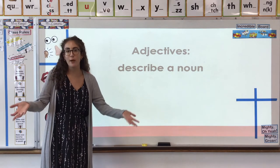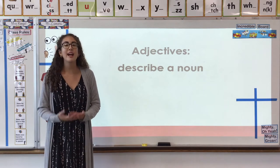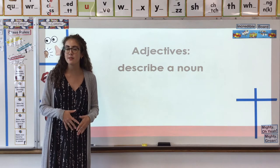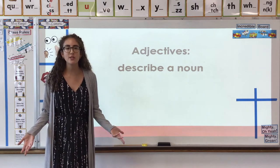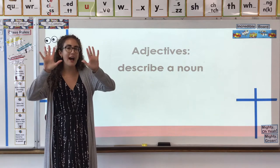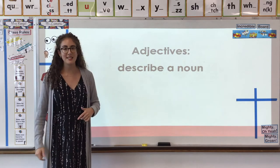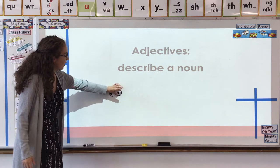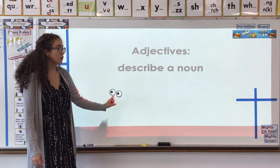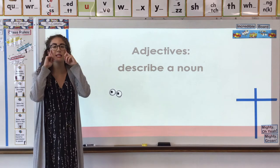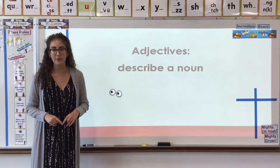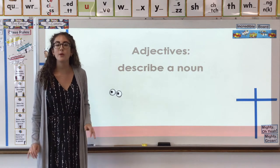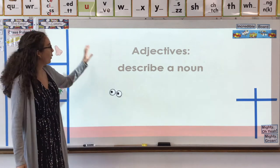We're going to be descriptive. The kinds of words that fall into the category of adjectives could answer questions when we're talking about our five senses. So it could be: what does a noun look like? What does something look like to you? Is it big? Is it small? Is it green? Is it blue? What does it look like?